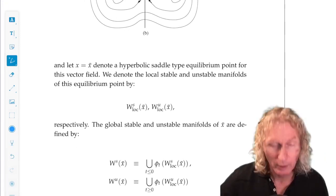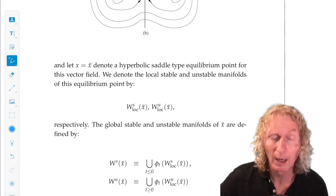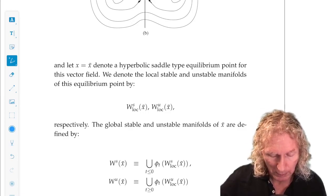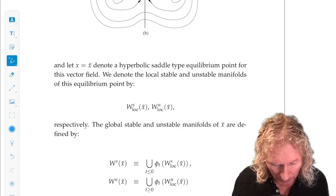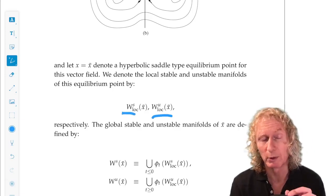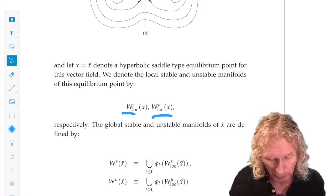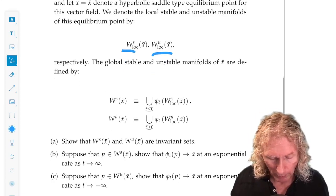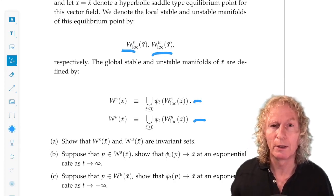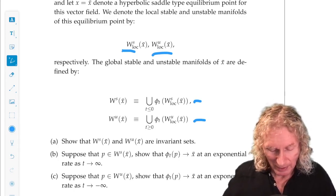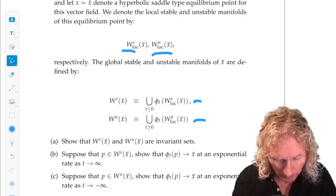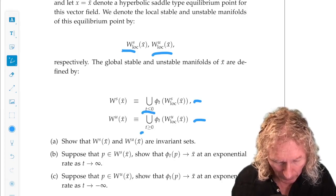So let x equal x bar denote a hyperbolic saddle-type equilibrium point for the vector field, and we're going to denote its stable and unstable manifolds by the usual local stable and unstable manifolds by the usual notation, and then we're going to globalize them by letting them flow under the flow in the appropriate direction of time. Backwards time for the stable manifold, forward time for the unstable manifold.